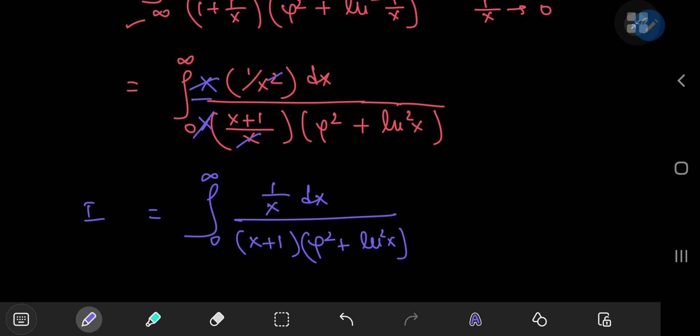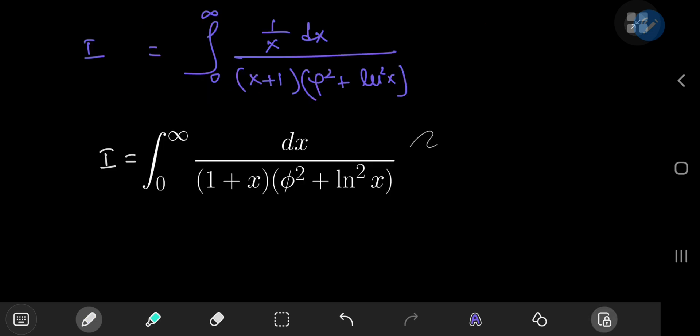So this here is the integral i. And this here is also the integral i. So if we add them up, we get 2i. Now, both integrals are from 0 to infinity. So we can just combine the integrands. And they both have the same denominator. See, that did come in handy. So we have something divided by x plus 1 times phi squared plus the square of the natural log of x. And that something up in the numerator is 1 plus 1 by x.